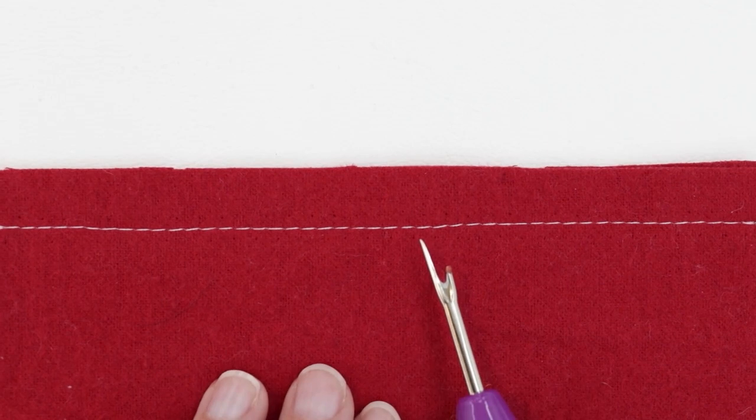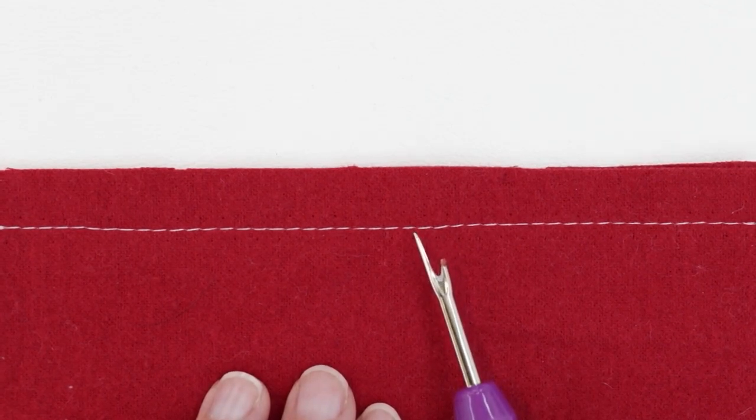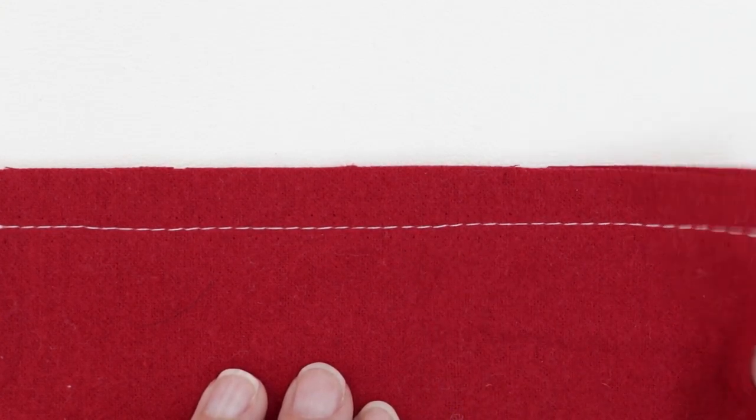Here is a second option for unpicking a straight seam. Sometimes when you're unpicking your seam, especially in plush or thick fabrics, it can be really hard to slide your seam ripper under your stitches. They could be difficult to see, or they could be sinking right into the fabric. And that can be really challenging. So here's another method you could use.